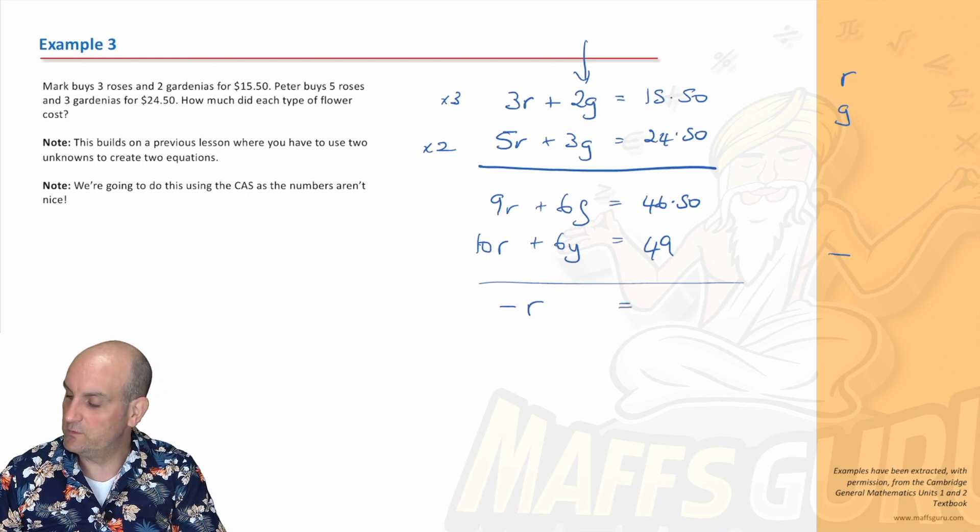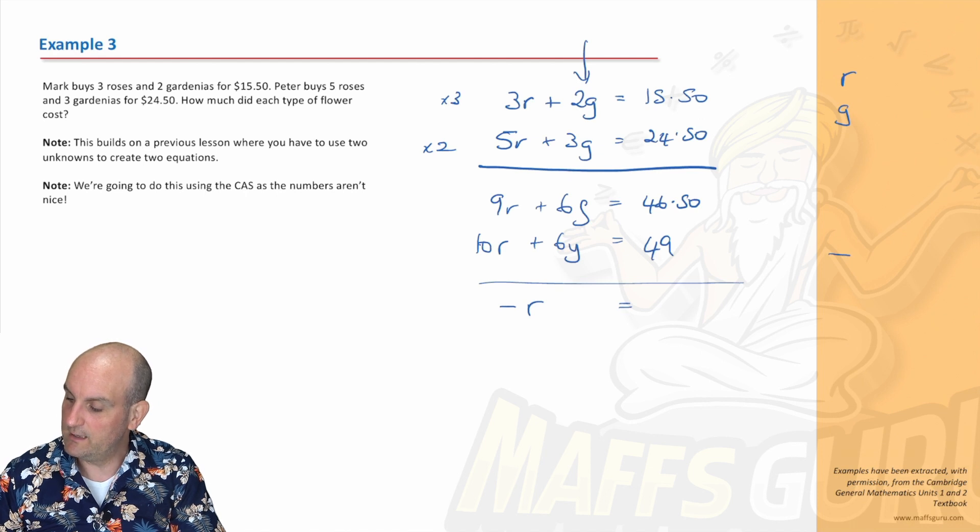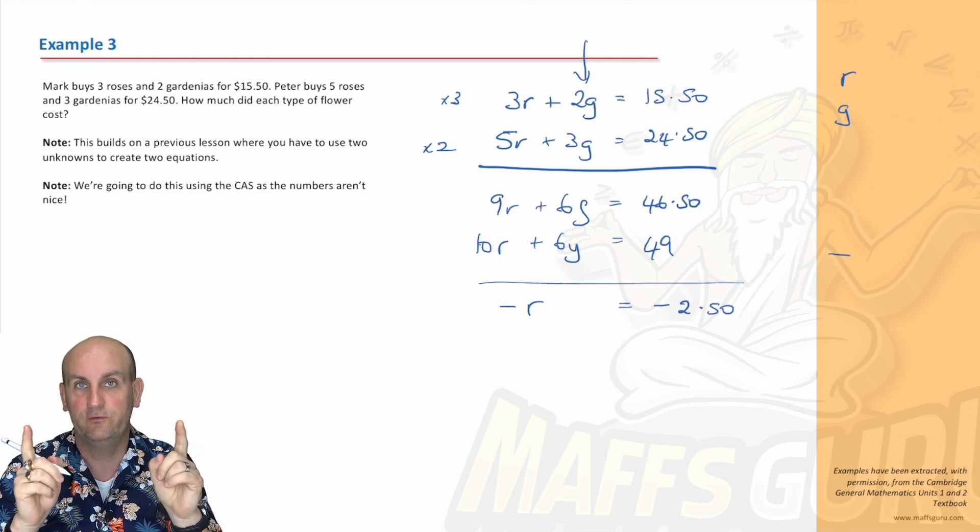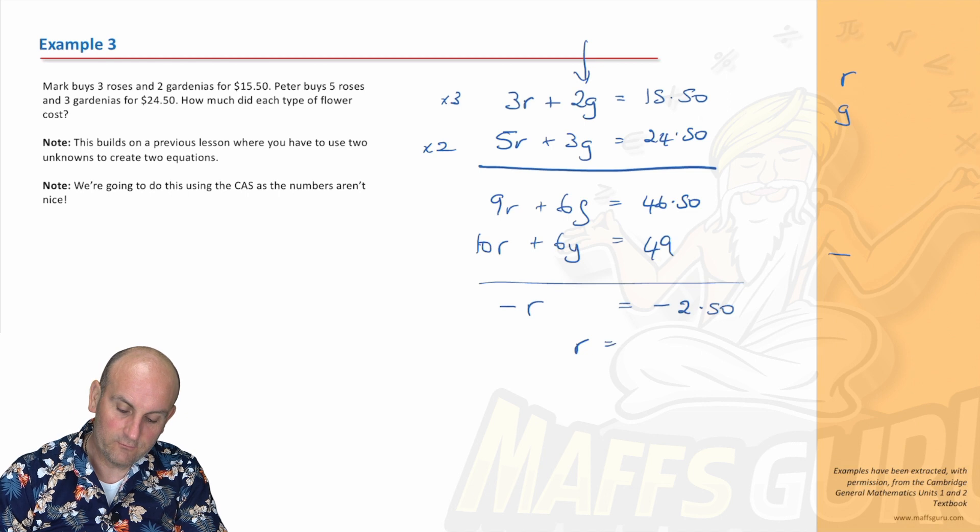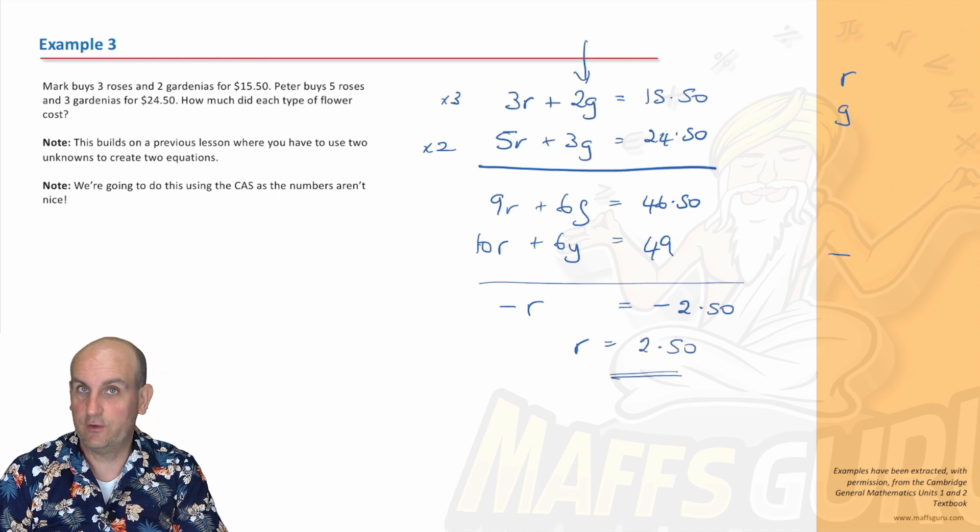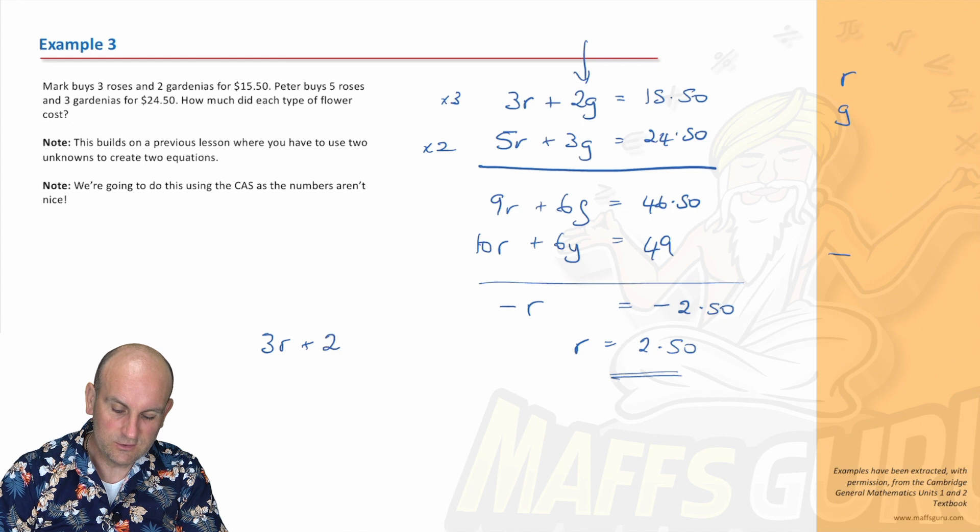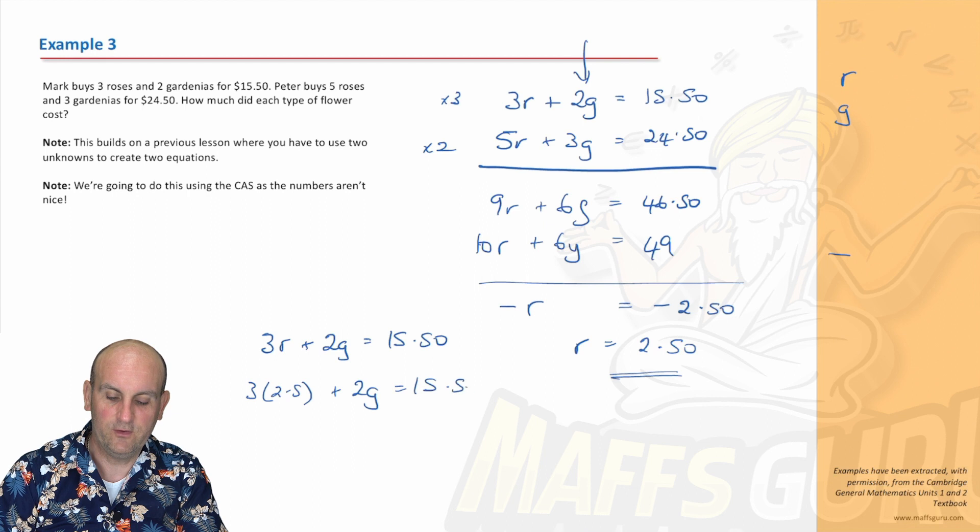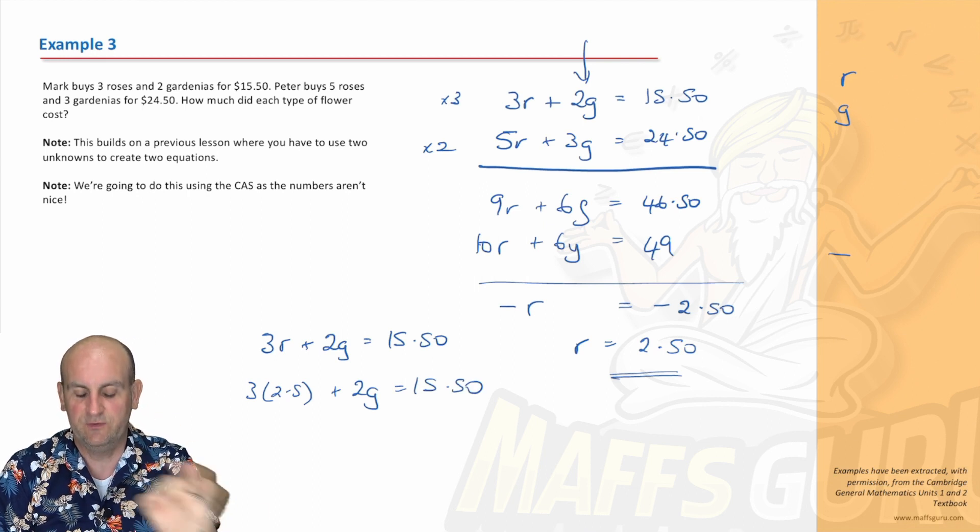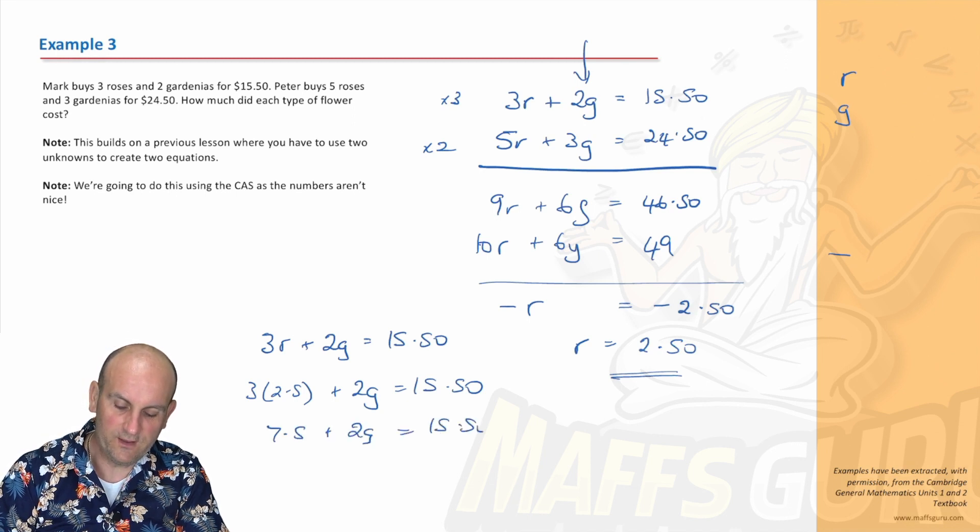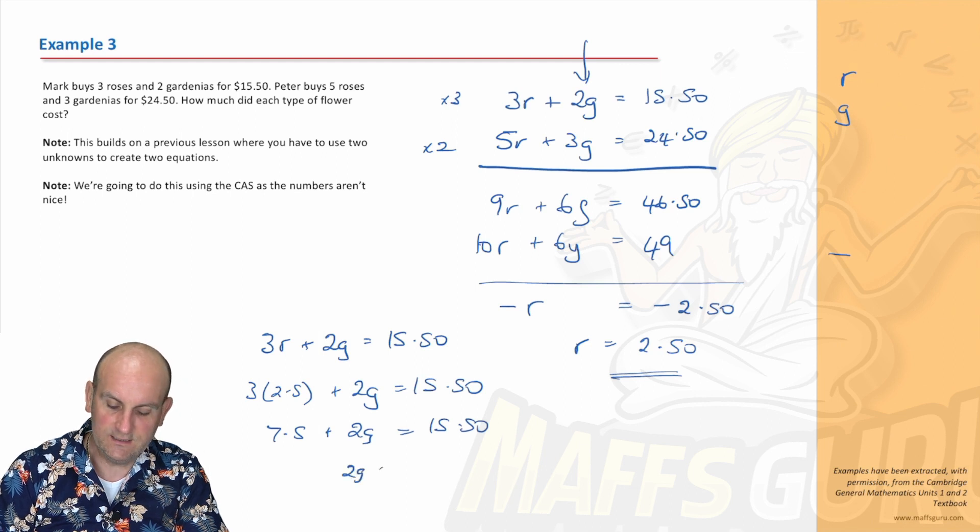Because there's a minus on both sides, they cancel out to give me the cost of a rose is $2.50. How do we find out the cost of a gardenia? We substitute it back in. We've got 3 roses plus 2 gardenias is $15.50. We now know that 3 times 2.5 plus 2G equals 15.50. I know a rose is 2.5, put it in, so it's going to be 7.5 plus 2G is 15.50. Take away $7.50 from both sides gives me 2G equals $8.